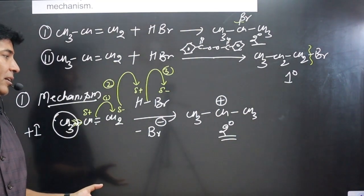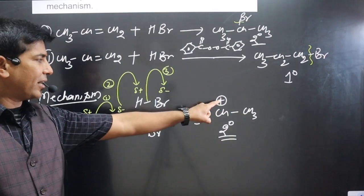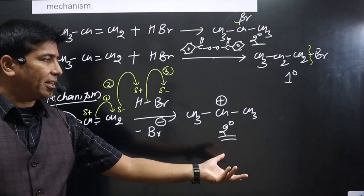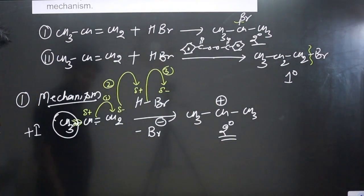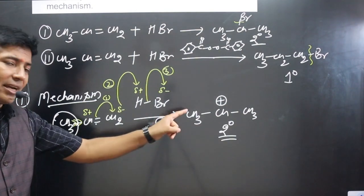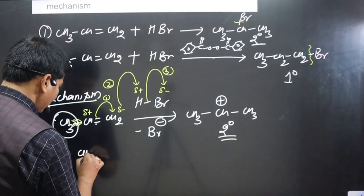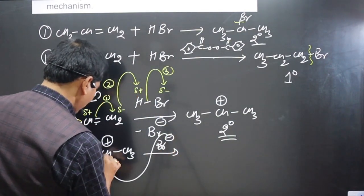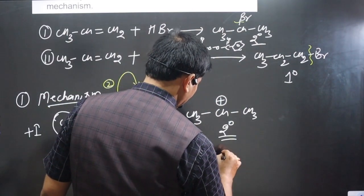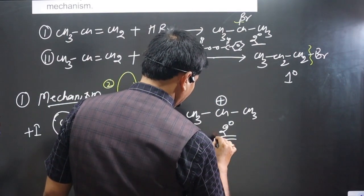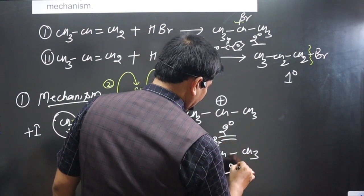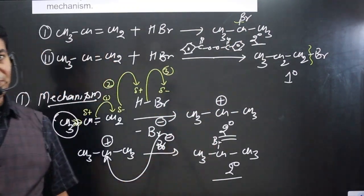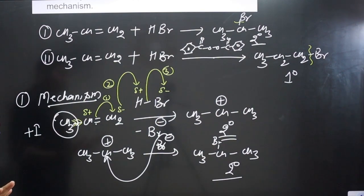From the secondary carbocation we get the final product. We cannot transfer the positive charge to the terminal carbons, as that would give a less stable primary carbocation. So Br⁻ attacks the more stable secondary carbocation, giving CH3-CHBr-CH3 — 2-bromopropane, a secondary alkyl halide. This is the Markovnikov mechanism.